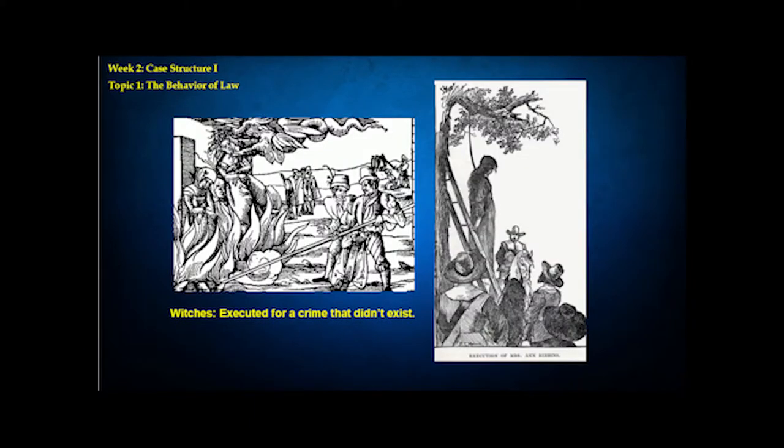An extreme example — and sort of the prototypical example of this labeling approach to deviance — is something like witchcraft trials and witch executions. Throughout the Middle Ages and Renaissance, and in many time periods and places around the world throughout history, people have been killed for witchcraft. They're accused of offenses like flying through the air at night on broomsticks and bringing supernatural curses to ruin their neighbors' crops.